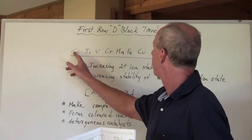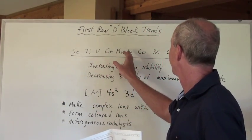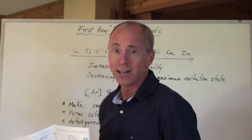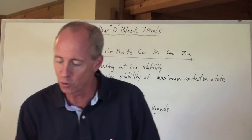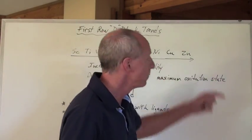I've listed those elements: scandium, titanium, vanadium, chromium, manganese, iron, cobalt, nickel, copper, and zinc in a row, and drawn an arrow this way.